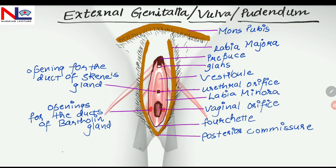Anteriorly there is the urethral orifice, which is in the midline and through which urine is passed. Posterior to that is the vaginal opening, which is partially closed by a fold of mucosal membrane termed the hymen. The vaginal opening is receptive for the male penis and serves as the passageway for the birth of a baby as well as the menstrual flow.